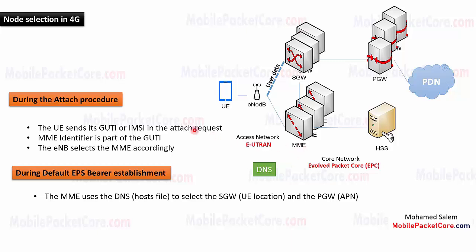In summary, during the attach procedure, the eNB selects the MME that shall serve the UE according to the GUTI received from the UE, or according to the local configuration applied to the eNB. And during the EPS bearer establishment procedure, the MME selects the SGW according to the UE location, and selects the PGW according to the APN that the UE shall connect to. Thank you and see you in the next video.